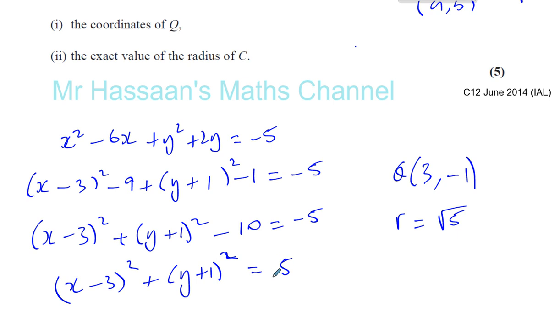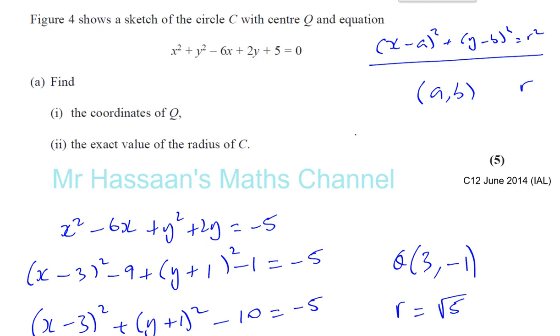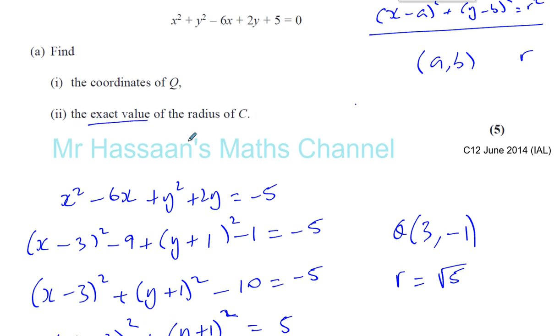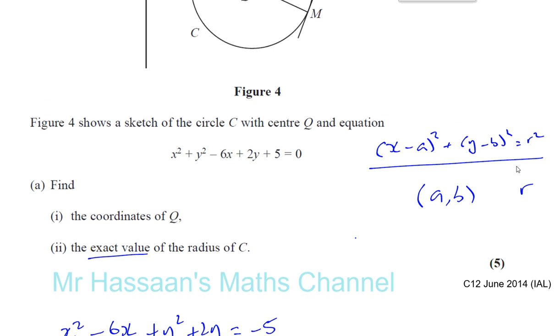Okay, the square root of this. This is R squared. And there we have found the answer for part A. So it says the exact value of the radius, so that gives you a clue that will be something in surd form. It says exact value. Okay, so we found the answer to part A, and I'll do part B in the next video. Thank you.